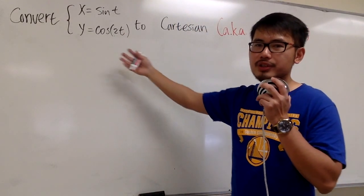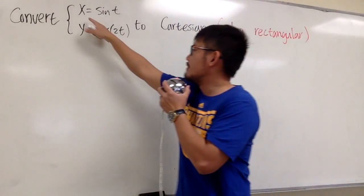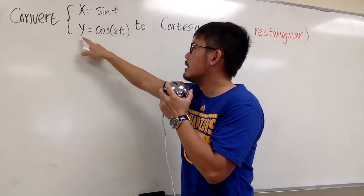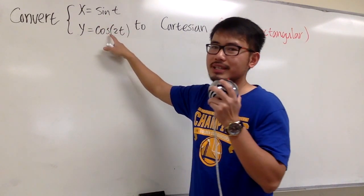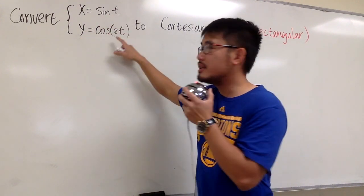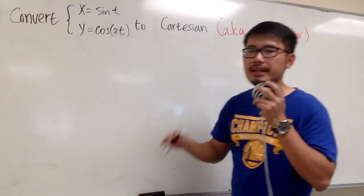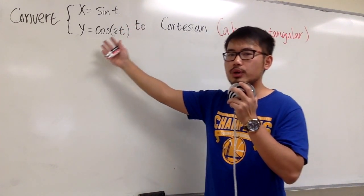We are going to convert this parametric equation to Cartesian. Here we have x equals sine t, but y equals cosine 2t. As you can see, the angles are different, and that's going to give us trouble whenever we're doing this kind of conversion.